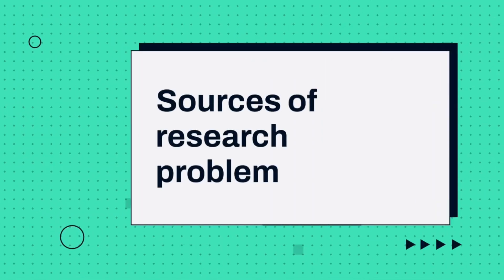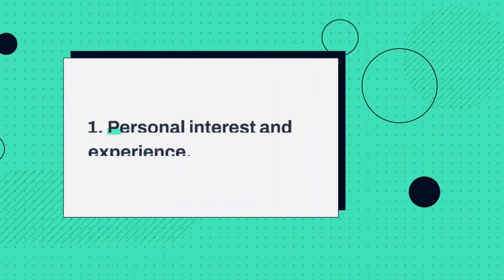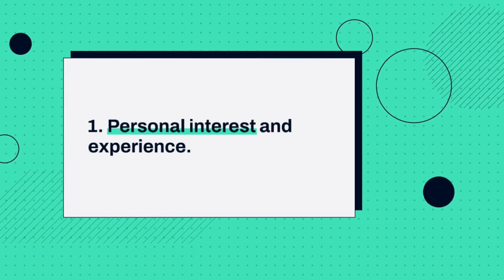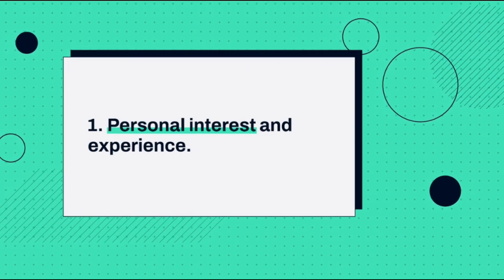Let's look at the sources of a research problem. Number one is personal interest and experience. The starting point of identifying a research problem is always what we experience in the empirical world. For example, you see a group of students using cigarettes, and it strikes your mind to conduct research on drug use among college students. Through personal experience, you have identified a research problem.